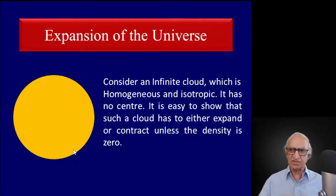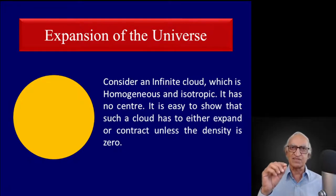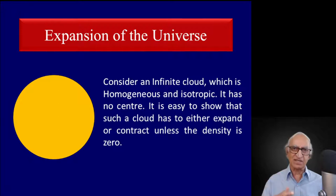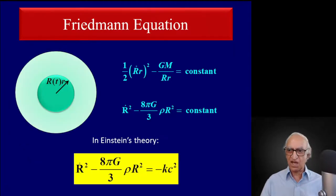In pure Newtonian theory, consider an infinite cloud that is homogeneous and isotropic — it has no center; every point inside is a center. It is very easy to show that such a cloud has to either expand or contract unless the density is zero. As long as there is energy density, it has to either expand or contract. The Friedman equation already makes this possible to see: Ṙ cannot be zero unless the density is zero. In other words, a stationary universe is ruled out.